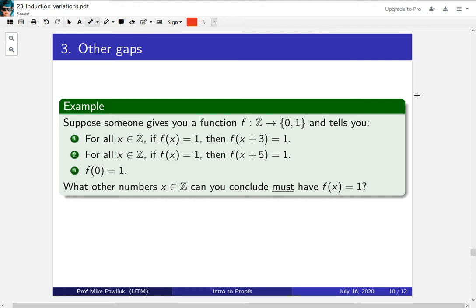Take a moment to compute this on your own. So by using the first property over and over, we get that since f(0) is 1, then f(3) will be 1, and then f(6) will be 1, and f(9) will be 1. So we keep applying the property over and over after applying it to 3.